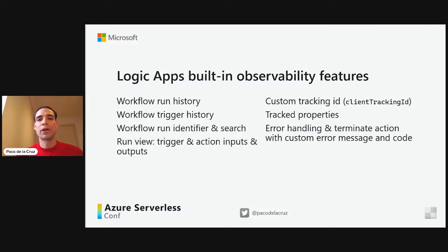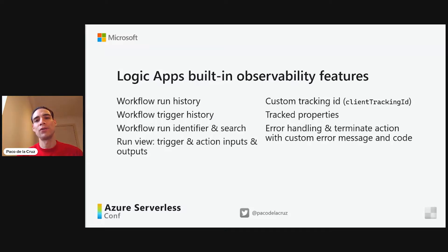Additionally, you can also have some error handling — for example, running an action if a previous action or scope failed. Within the error handling, we can terminate the workflow using a custom error message or custom error code, and again this is to provide more information for the operations team. I'm going to show all of that in the demo.